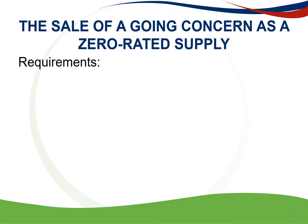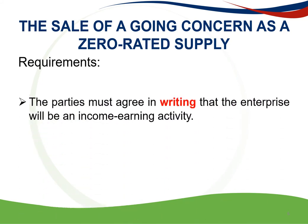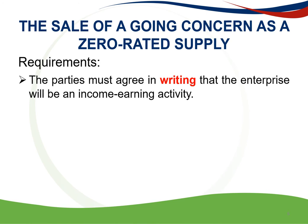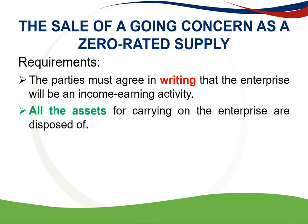For the disposal of an enterprise as a going concern to be zero-rated, the following criteria must be met. The parties must, at the time of conclusion of the contract, agree in writing that the enterprise will be an income-earning activity on the date of its transfer. All the assets necessary for carrying on the enterprise must be disposed of by the supplier to the recipient — though it's not required that all assets be disposed of, only those necessary for carrying on the enterprise.